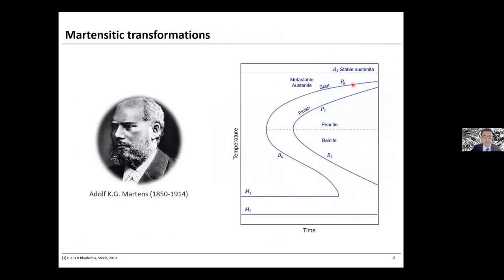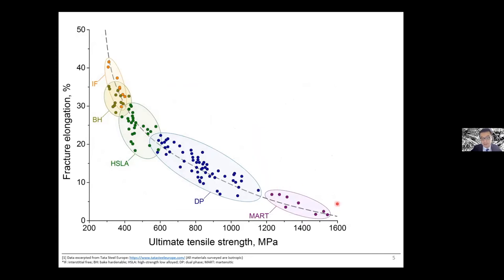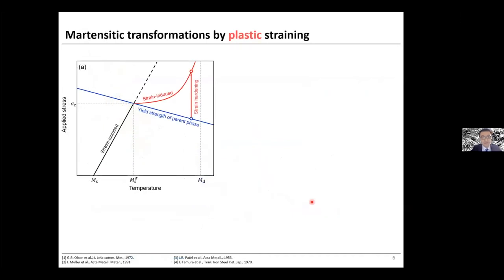One phase transition of particular interest in steel metallurgy is the martensitic transformation, discovered by German metallurgist Martens back in the 18th century. If we quench a metastable austenite at a relatively fast cooling speed, what we get is nanostructured material consisting of fine structures, for example twins — here you see lenticular twins within the martensite. Because of the high cooling speed, we end up with martensitic steels having relatively high strength but limited ductility due to high defect concentration.